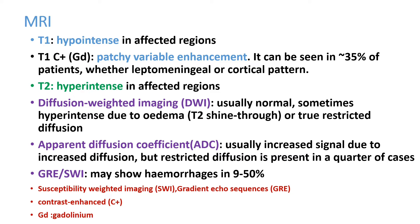MRI images can show features like hypointense lesions on T1, patchy variable enhancement, and hyperintense areas on T2. Diffusion-weighted imaging is usually normal but sometimes hyperintense due to edema or true restricted diffusion. ADC may show usually increased signal due to increased diffusion, but restricted diffusion is present in a quarter of cases.